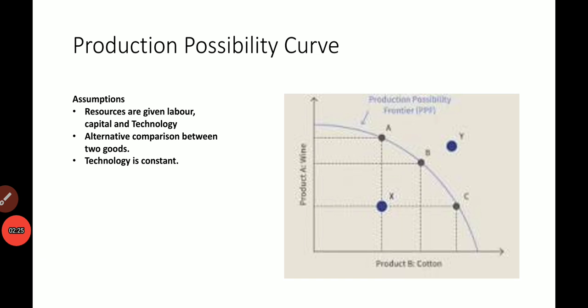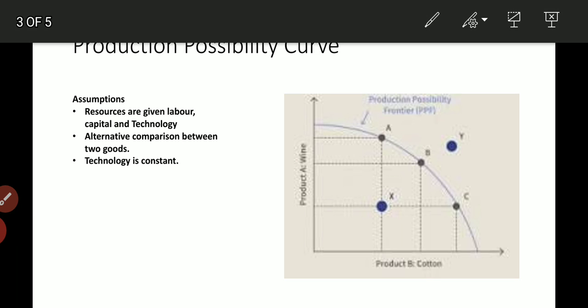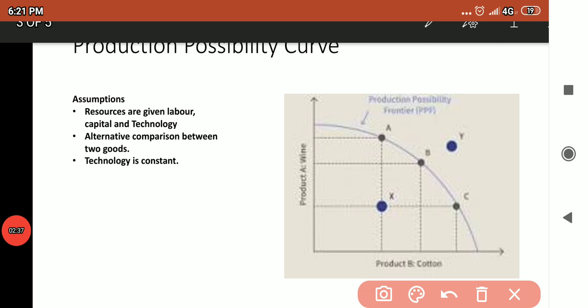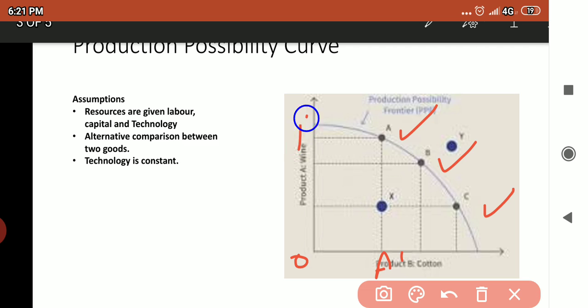When we compare points A, B, and C on this curve, these points are all showing the amount of 10 lakh investment money that the producer has to finish in producing these two goods.